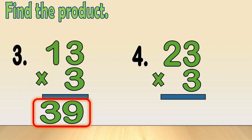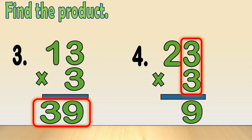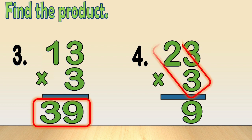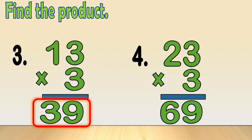Number 4: 23 times 3. Multiply the multiplier by the digits in ones and tens place, respectively, and write the product in their corresponding places. So, 3 times 3 is equal to 9 ones, and 2 times 3 is equal to 6 tens. So, 23 times 3 is equal to 69.